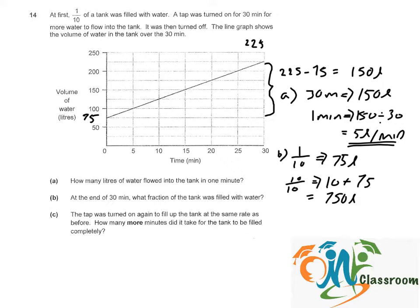At the end of 30 minutes, we have 225 liters. The fraction of the tank filled with water will be 225 over 750, that will give us 3 over 10.